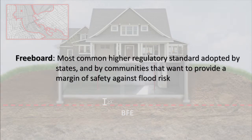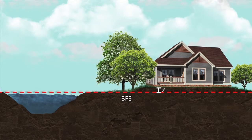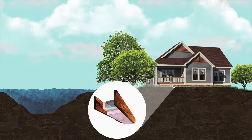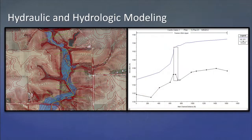Freeboard is the most common higher regulatory standard adopted by states and communities that want to provide a margin of safety against flood risks. Requiring freeboard above the base flood elevation can help protect buildings from floods that are larger than the base flood event. Additionally, requiring freeboard may also help better protect floor joists, ductwork, and insulation located underneath the structure's lowest floor. It may also compensate for the uncertainties associated with hydraulic and hydrologic modeling and the limitations of mapping.